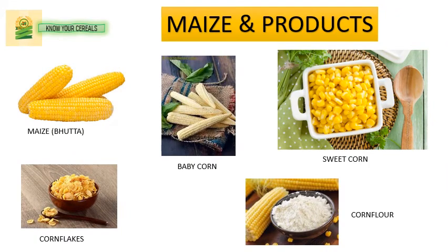There are different kinds of maize products. This is the maize or normal bhutta. There is a variety known as baby corn — they are soft, tender and juicy. Sweet corn are the corn kernels which are sweet in taste. Corn flour is made similarly to maida. Corn flour and corn flakes are heavily and widely used breakfast cereals.